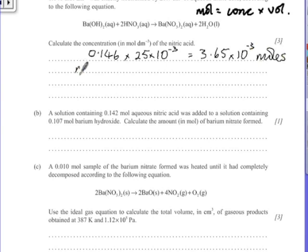The equation tells us that the moles of nitric acid are going to be twice that. So the number of moles of nitric acid we've got is going to work out at 7.3 times 10 to the minus 3.